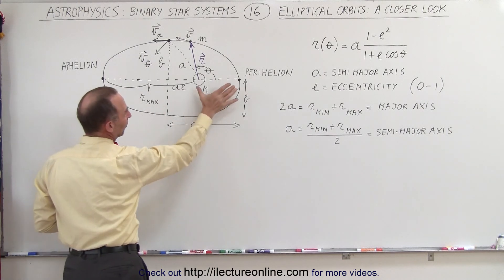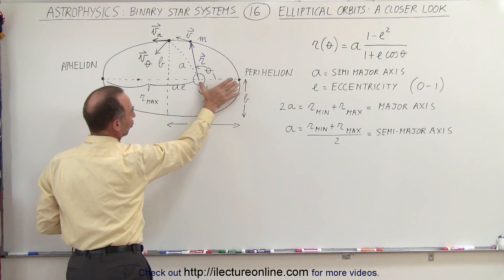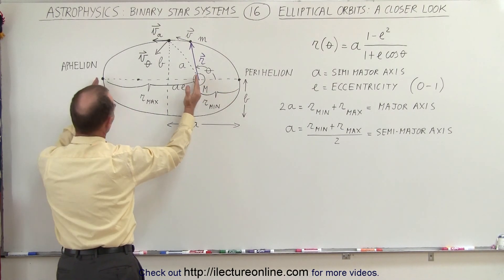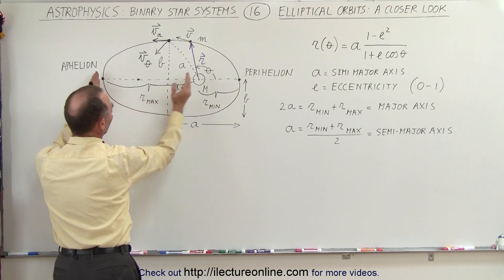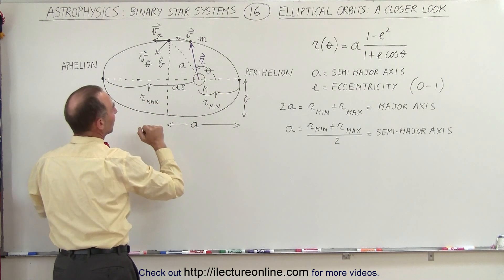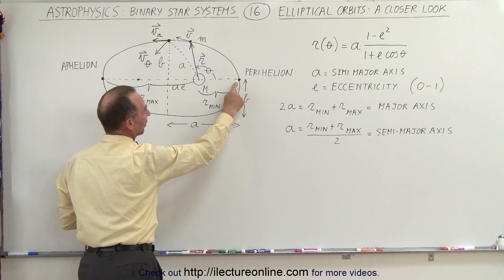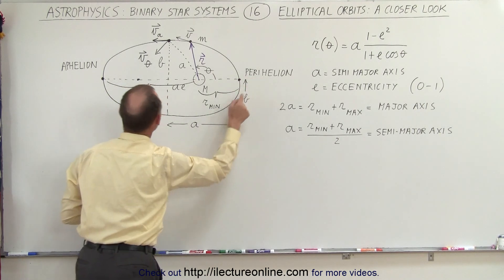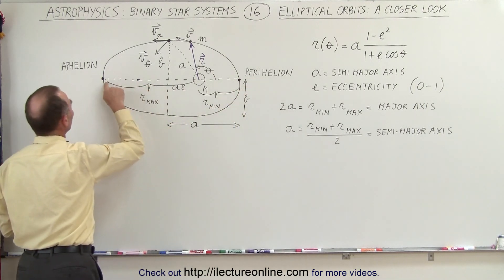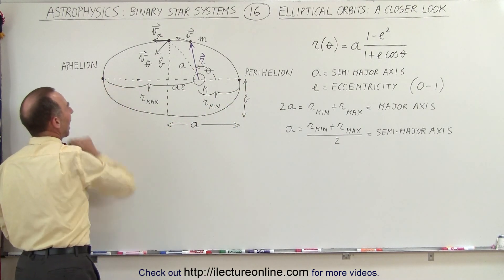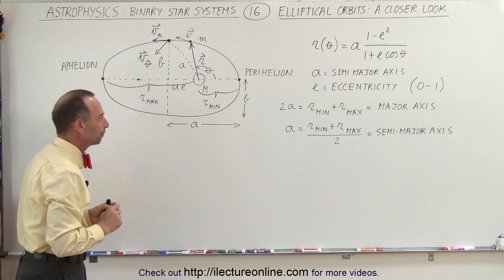Notice that sometimes the planet is much closer to the sun — this would be the minimum radius — and sometimes it's farther away from the sun — this is called the maximum radius. When it's closer to the sun, it's at the perihelion. When it's farthest away from the sun, it's at the aphelion.